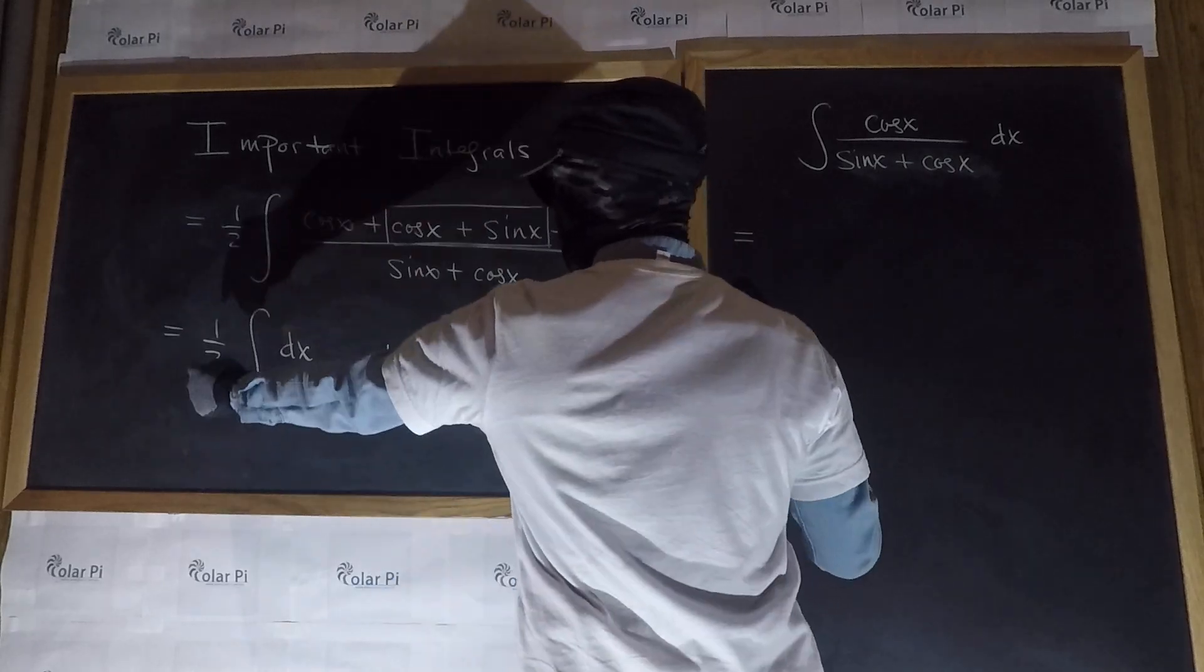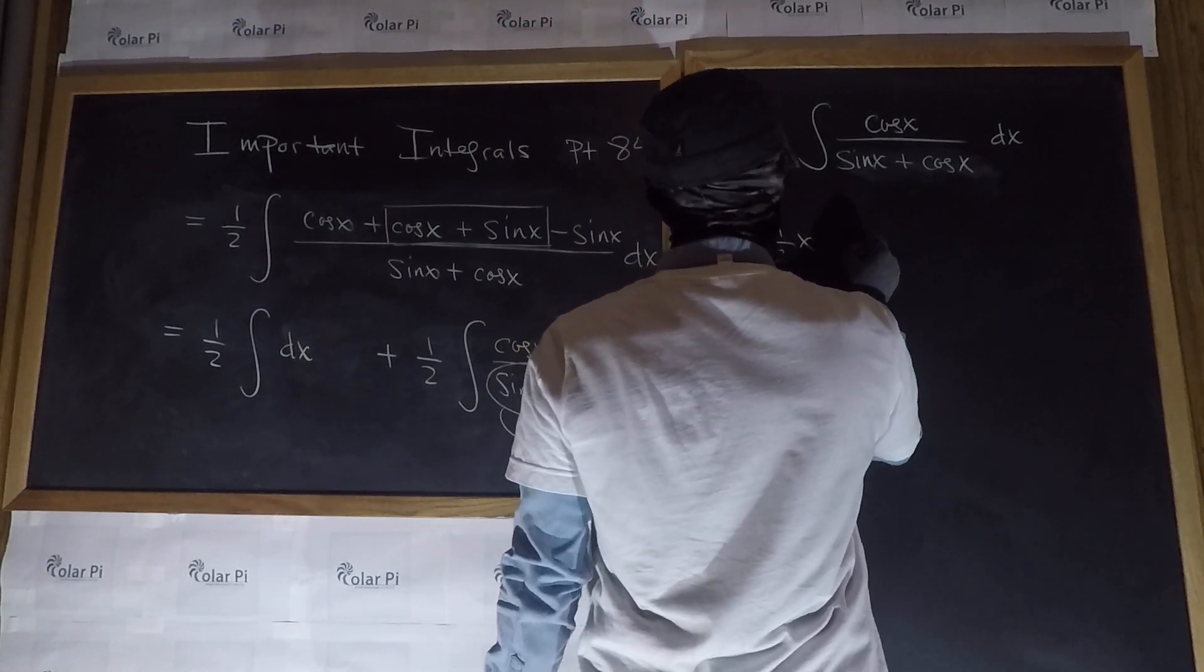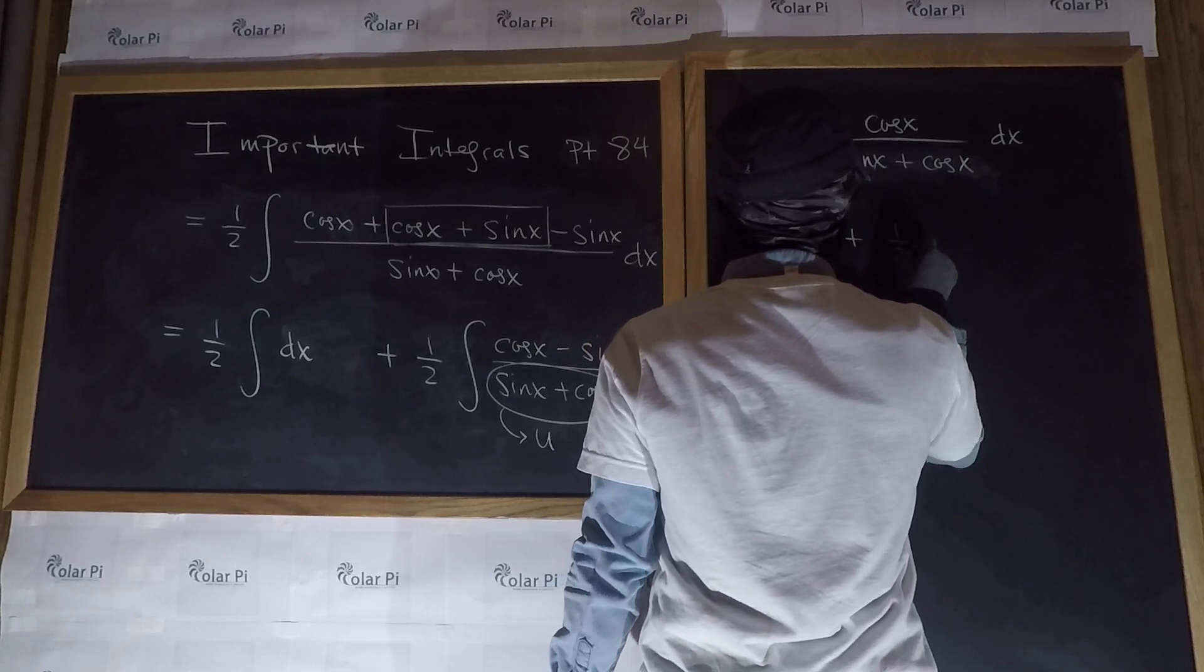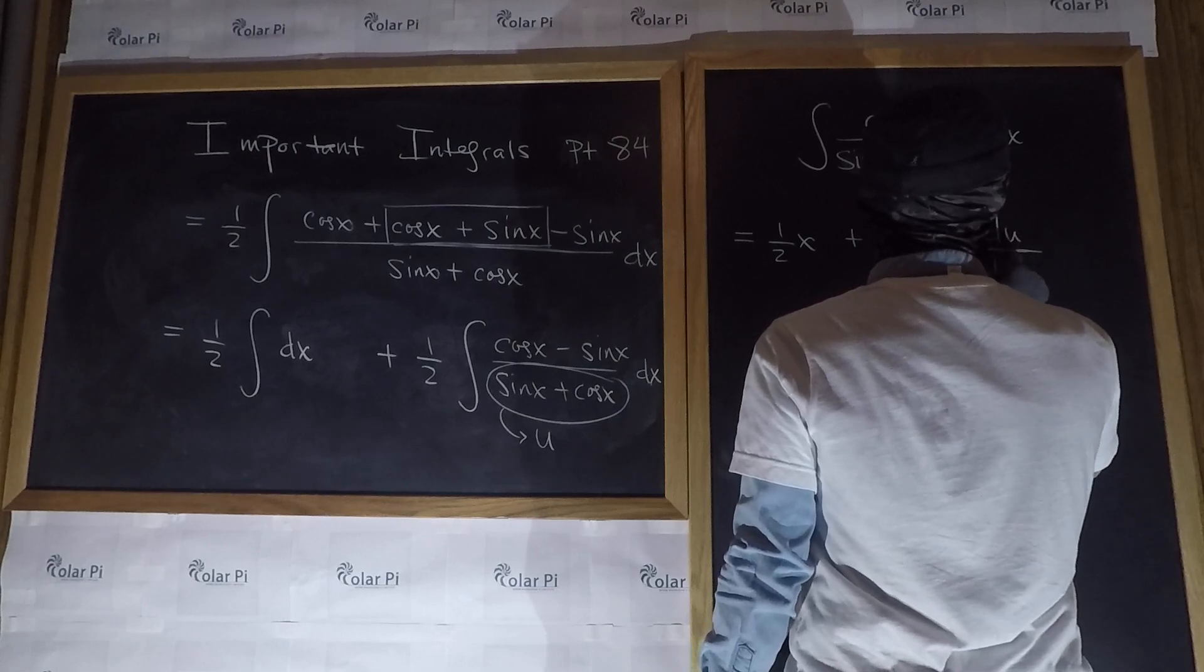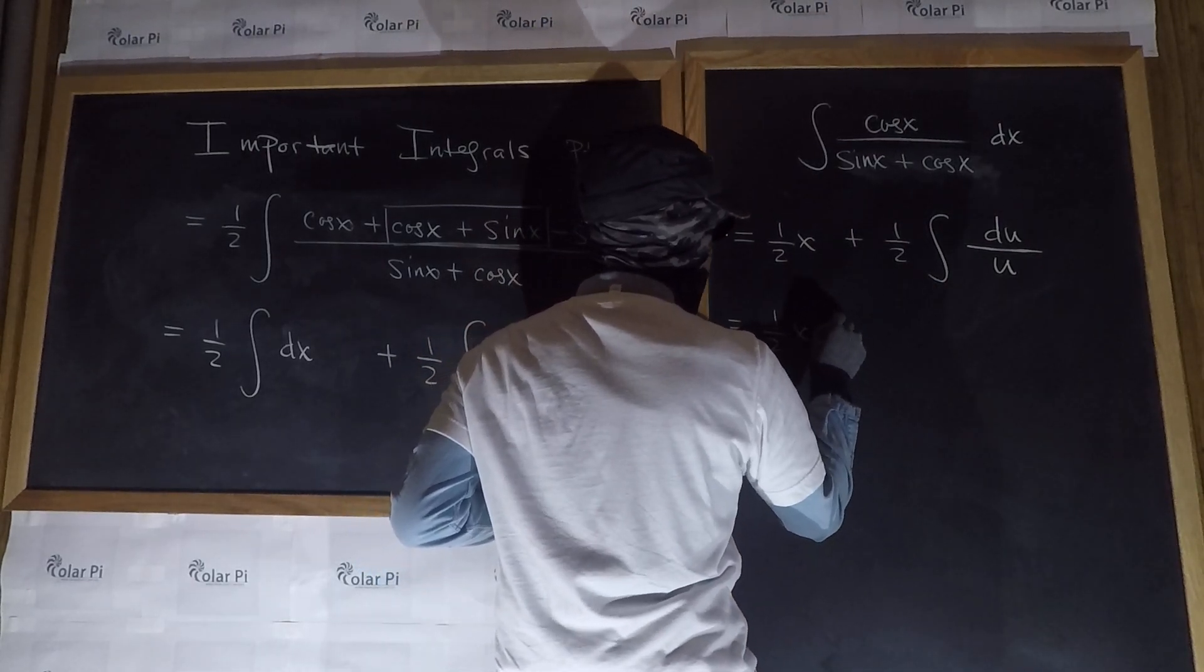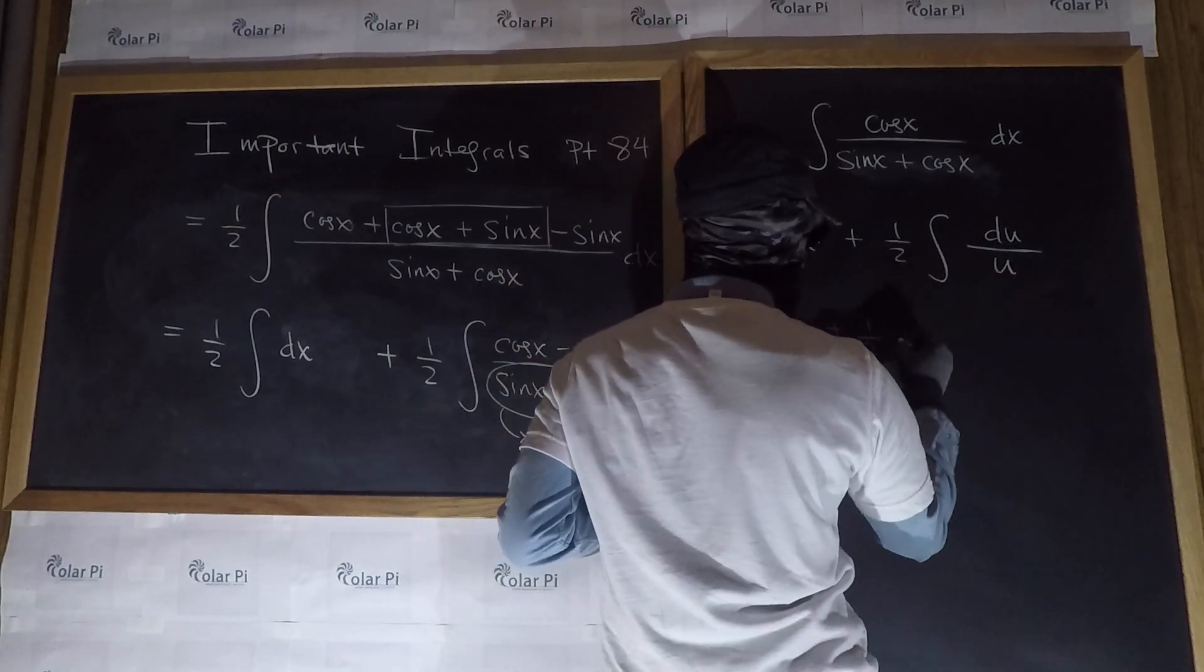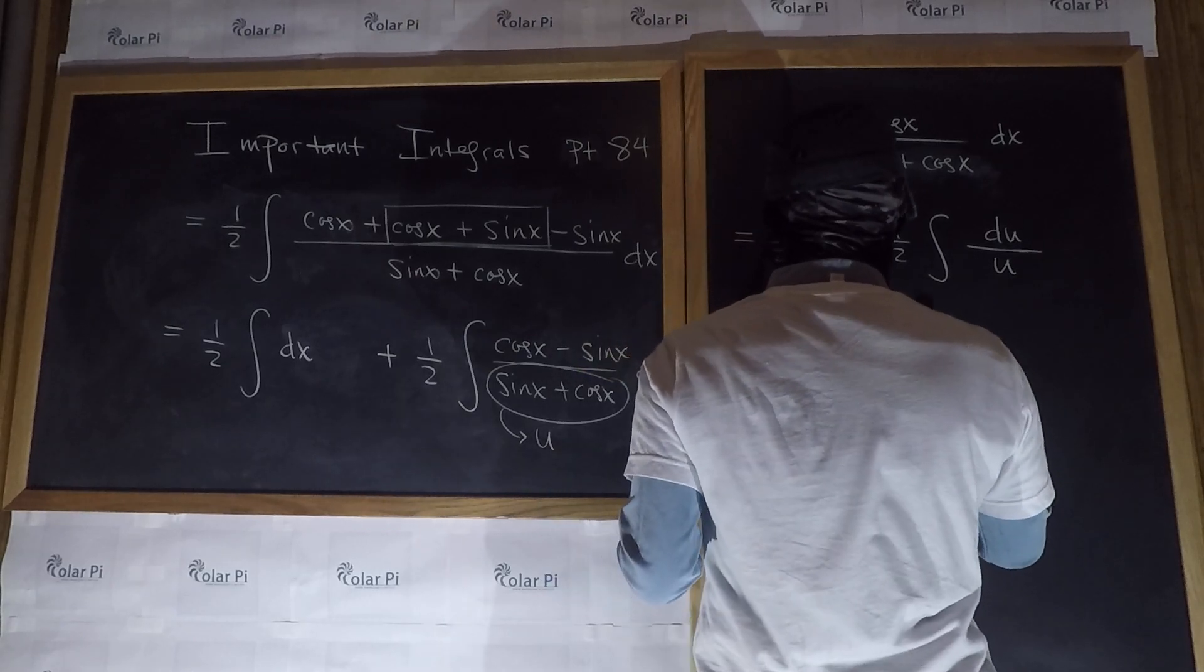well, a half integral of dx is just a half x, and then plus a half integral of du over u. But, wait, that's just a half x plus a half, and then this integral is natural log of u, but u was,